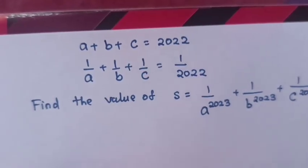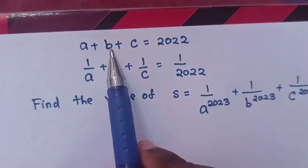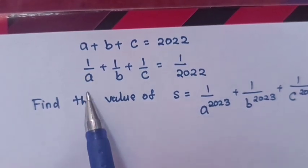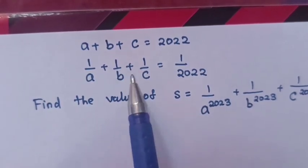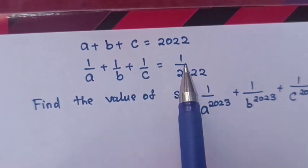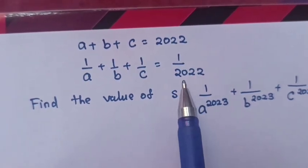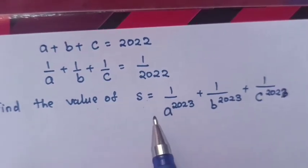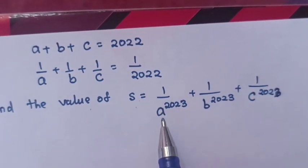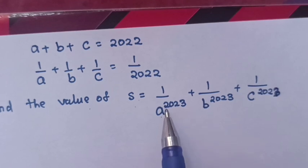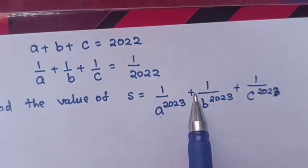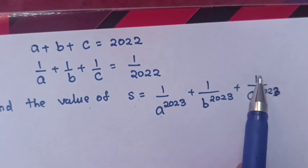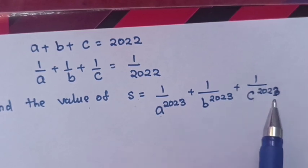Hello. How to solve a system of equations: A plus B plus C equals 2022, and 1 over A plus 1 over B plus 1 over C equals 1 over 2022. Find the value of the sum of 1 over A to the power of 2023, plus 1 over B to the power of 2023, plus 1 over C to the power of 2023.